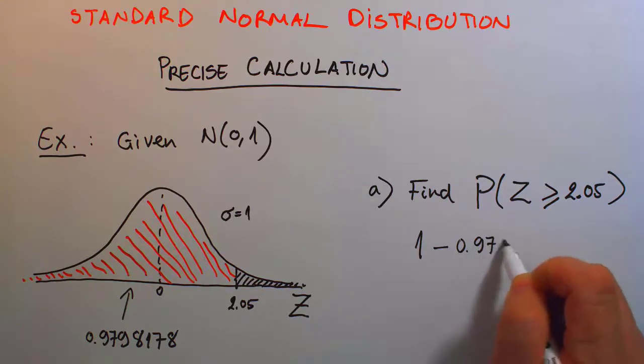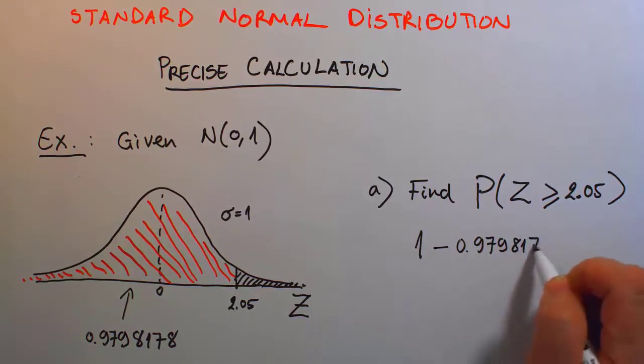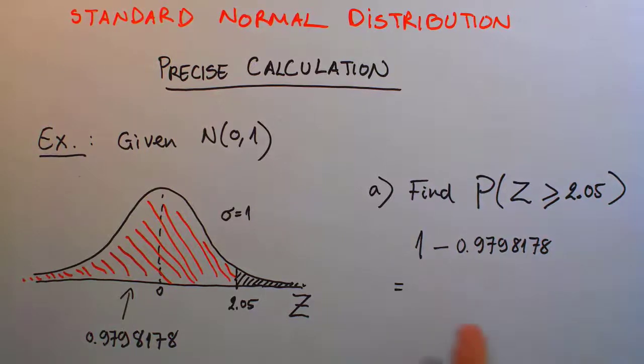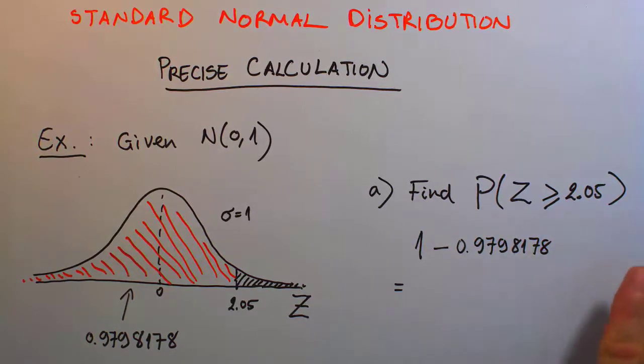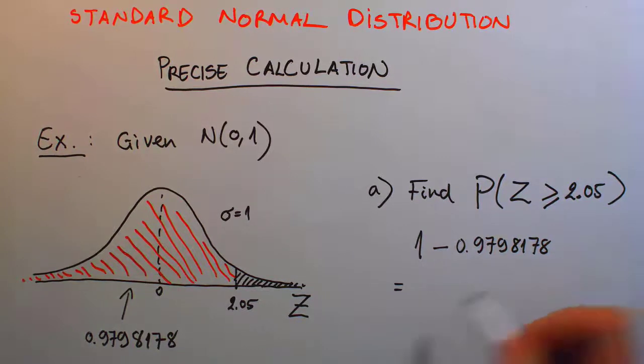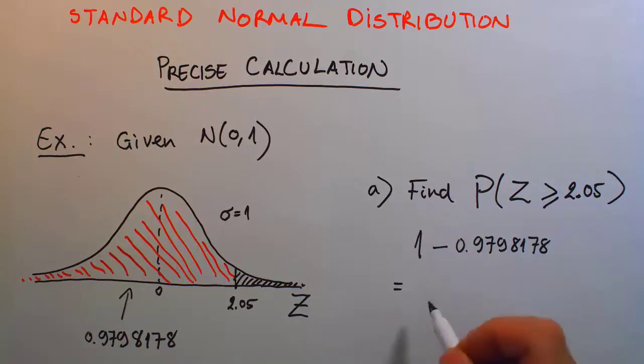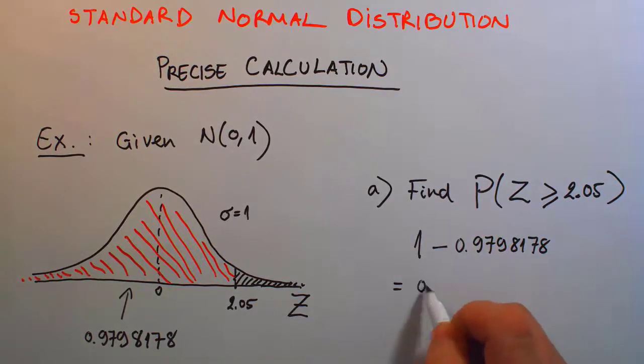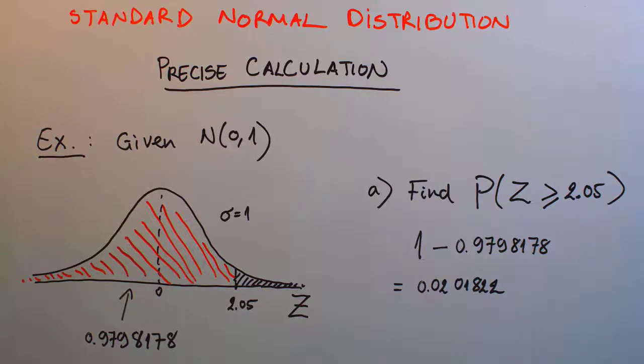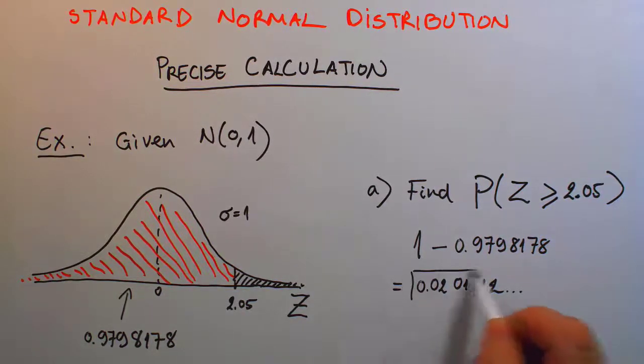1 minus 0.9798178. Usually, for writing out purposes, anywhere from 6 to 8 decimals is good. Keep about 6 to 8 decimals in each of these steps. It doesn't have to go too long. Usually final answers we can legally round to 4 decimals. This final answer calculation comes out being 0.0201822. That is our final answer.